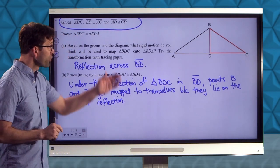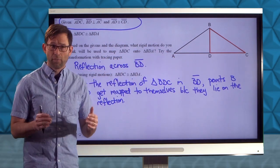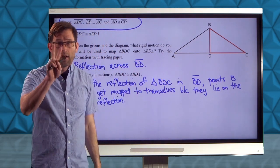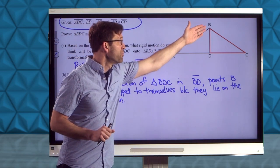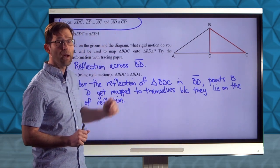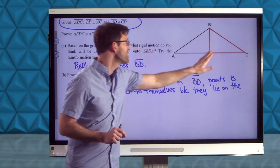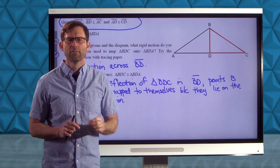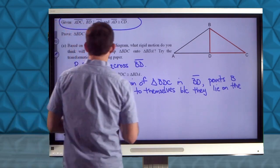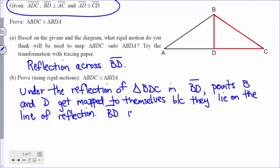We've already mapped B to B and D to D — that's two of the three vertices done. Now the real question is: why do the givens tell us that under this reflection, C will get mapped to A? BD is the perpendicular bisector of AC — perpendicular because we're told BD is perpendicular to AC, and a bisector because we're told AD is congruent to DC, satisfying both conditions of being a perpendicular bisector.